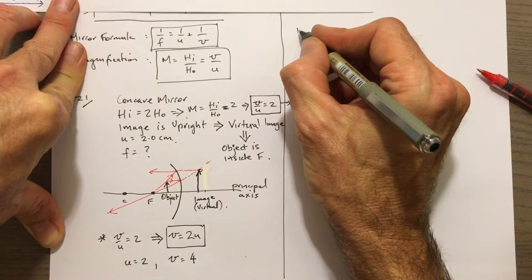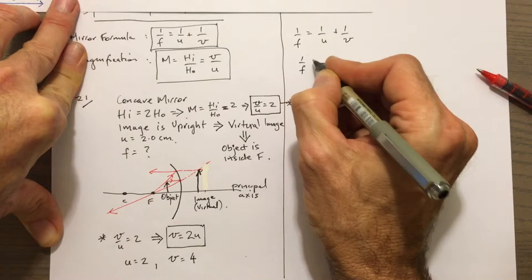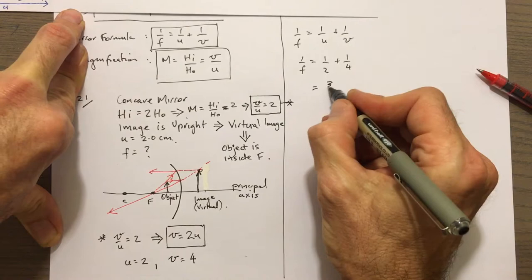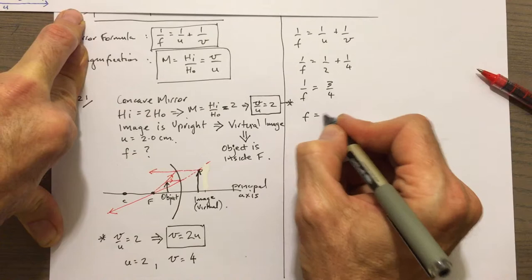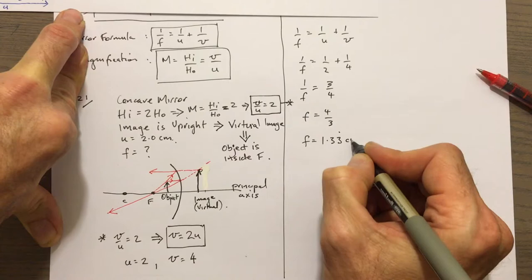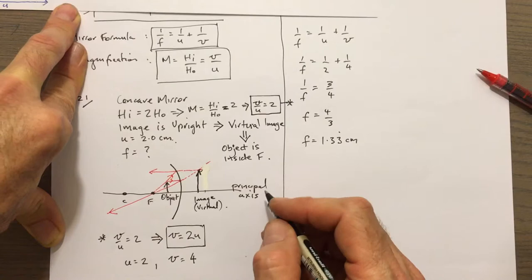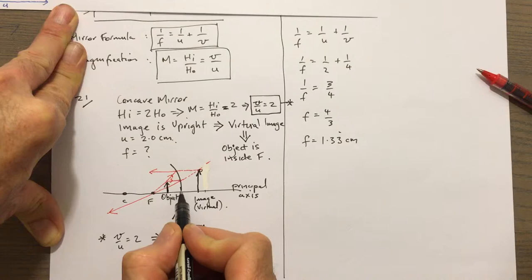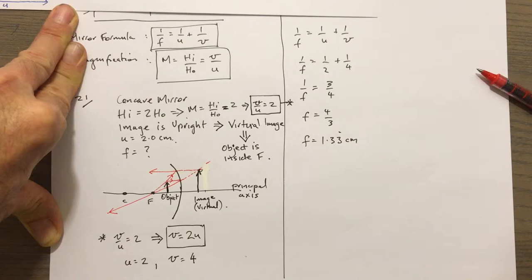Using the mirror formula: 1/F = 1/U + 1/V. With U = 2 and V = 4, that gives 1/F = 1/2 + 1/4 = 3/4, so F = 4/3, which is approximately 1.33 centimetres. For a dentist's mirror inside your mouth — about 1.3 centimetres from the teeth — the virtual image seen behind the mirror will be double the size. That's question 21 done.